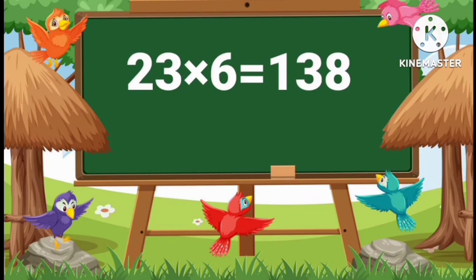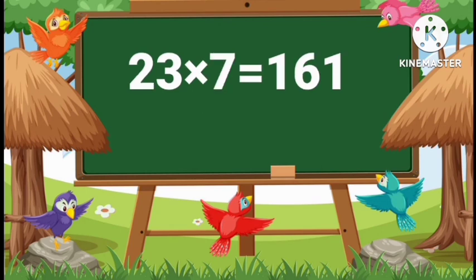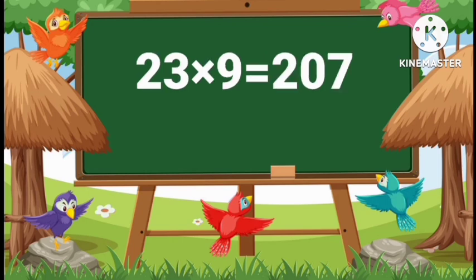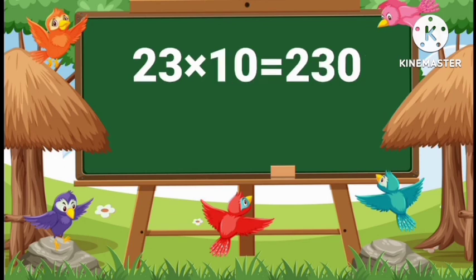23 sixes are 138. 23 sevens are 161. 23 eights are 184. 23 nines are 207. 23 tens are 230.